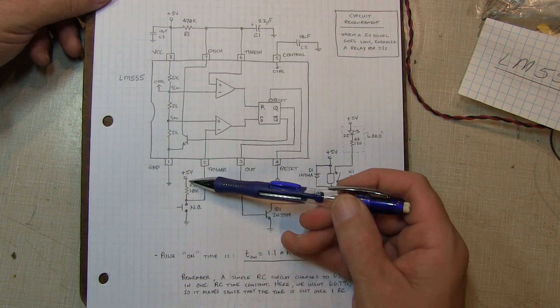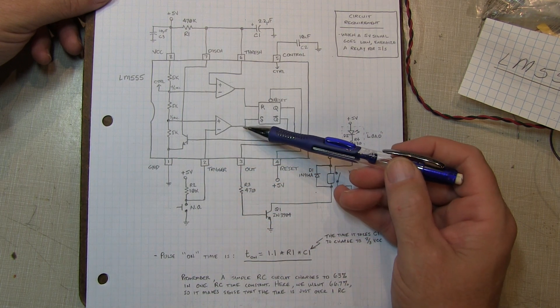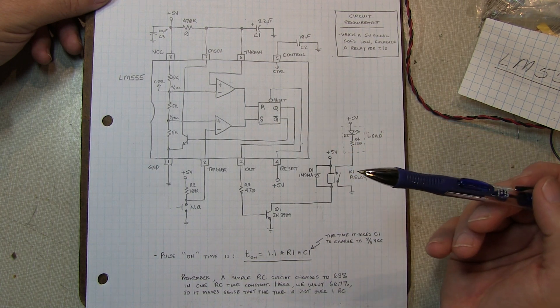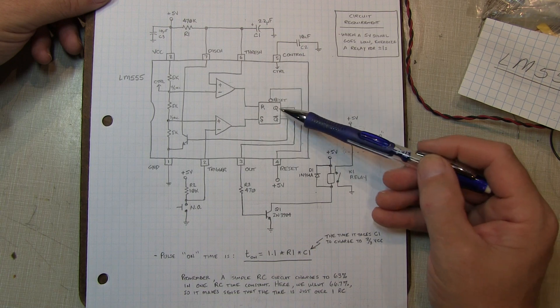Similarly, with the 5 volts applied to the trigger input, the output of this comparator is also low, which means that the flip-flop is not going to change state. So we're sitting here, if we're not triggered, we're going to be sitting in that reset condition.